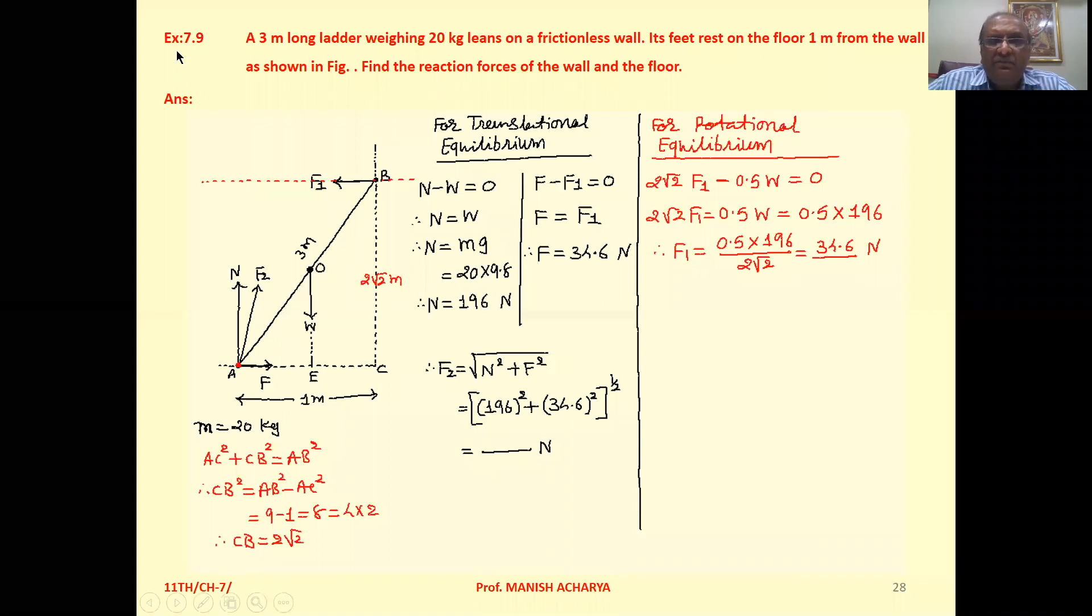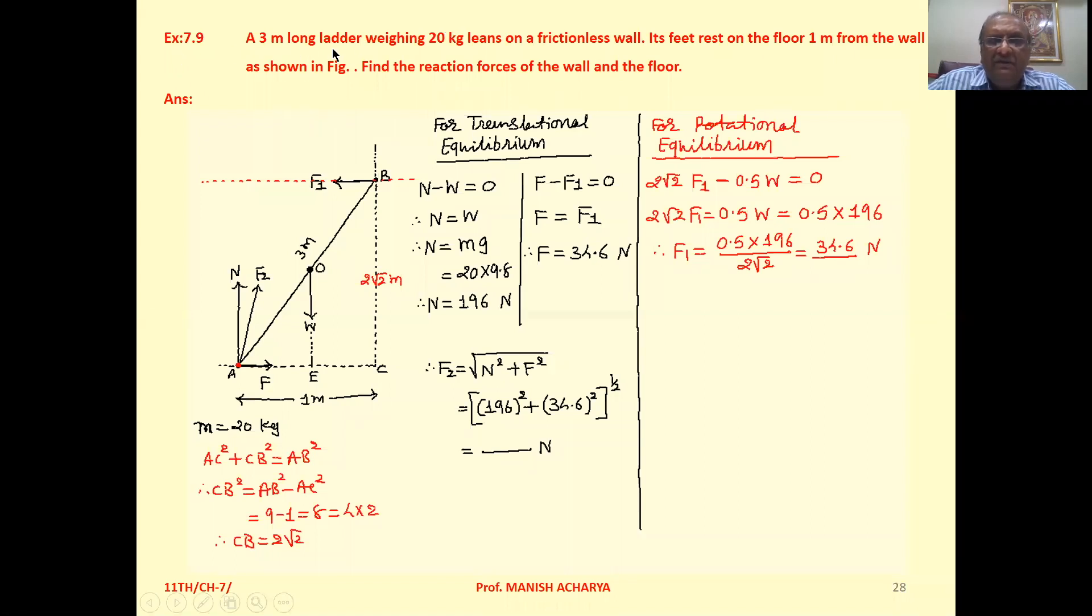Example 7.9: A 3 meter long ladder weighing 20 kilogram leans on a frictionless wall. Its feet rest on the floor 1 meter from the wall as shown in the figure. Find the reaction forces of the wall and the floor.